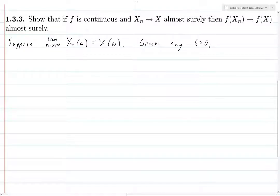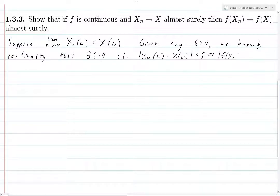Now, given any epsilon greater than zero, we know by continuity of f that there exists some delta greater than zero such that if x_n of omega minus x of omega is less than delta, then f of x_n of omega minus f of x of omega is less than epsilon.